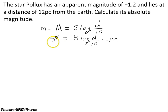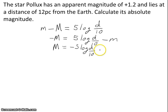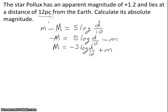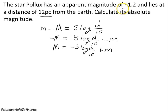Now I'm going to multiply both sides by negative 1 to get rid of this negative sign. Now we just need to insert the information the problem gives us. The distance of the star is 12 parsecs — it's important that your unit of distance is in parsecs — and our apparent magnitude is plus 1.2.